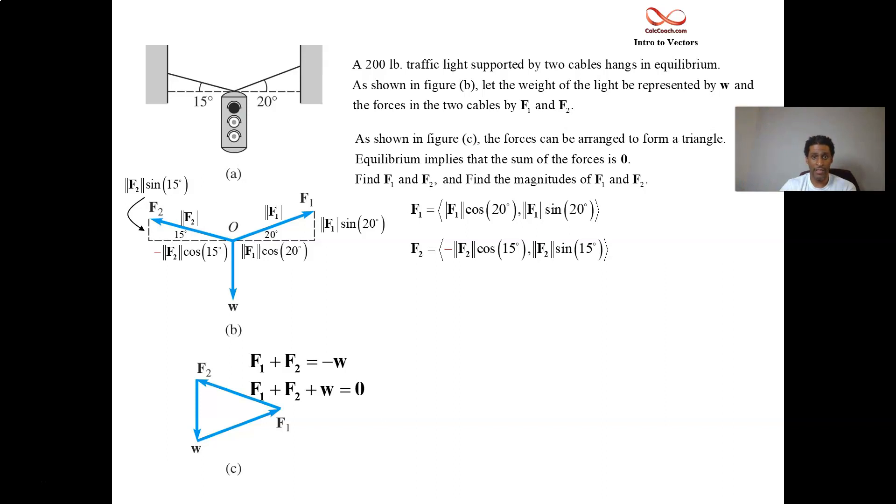We have F1 and its I and J components, we have F2. We just need to throw in W and add these guys together. What's the W vector? What is the I component of the W vector? It has no I component. It's just pointing downward in the J component.